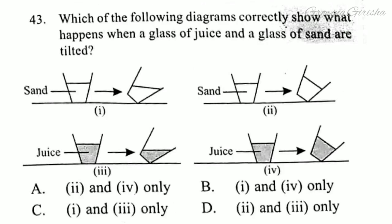Question 43. Which of the following diagrams correctly shows what happens when a glass of juice and a glass of sand are tilted? Answer is option C: One and three only.